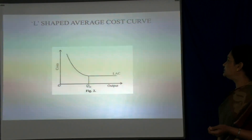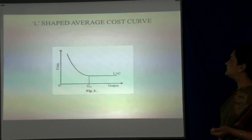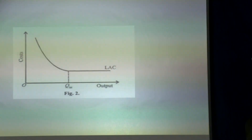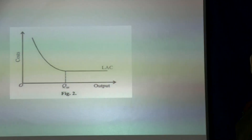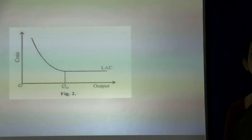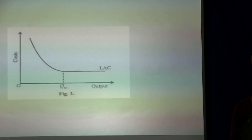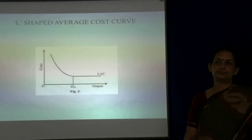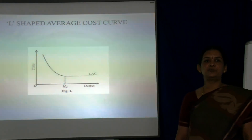This diagram shows the shape of the long-run average cost curve — it is L-shaped. The X-axis represents output and the Y-axis represents cost. Thank you, students.